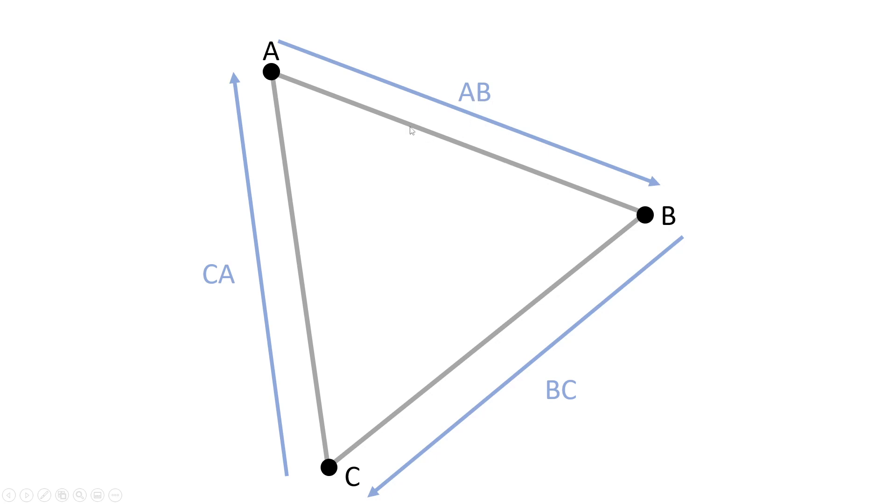We can calculate that direction by subtracting B minus A. The same thing for the direction vector. For this one it's going to be subtracting C minus B.